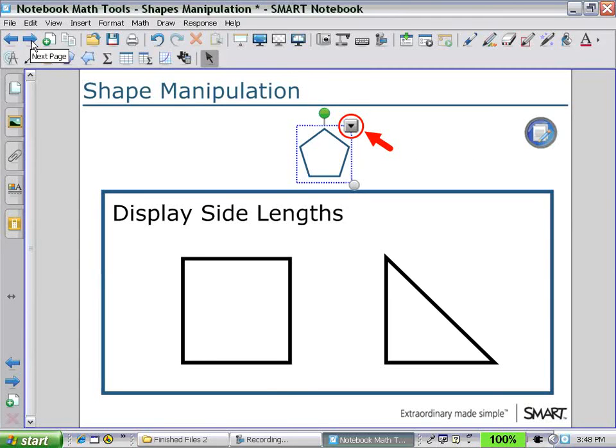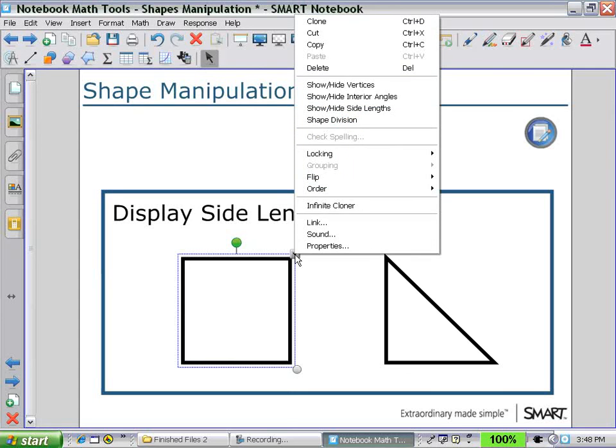Next, we can display side lengths. Again, selecting a shape and using the arrow pull down menu, this time select show and hide side lengths.